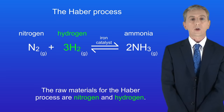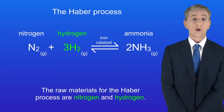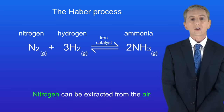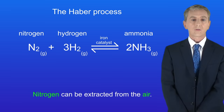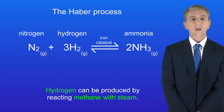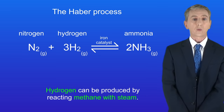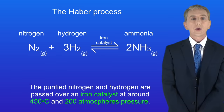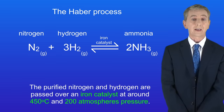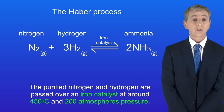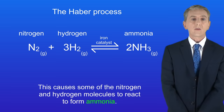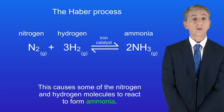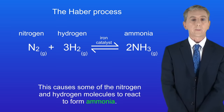In the exam you could be asked to name a source for these raw materials. Nitrogen can be extracted from the air, whereas hydrogen can be produced by reacting methane with steam. The purified nitrogen and hydrogen are passed over an iron catalyst at around 450 degrees Celsius and 200 atmospheres pressure, causing some of the nitrogen and hydrogen molecules to react and form ammonia.